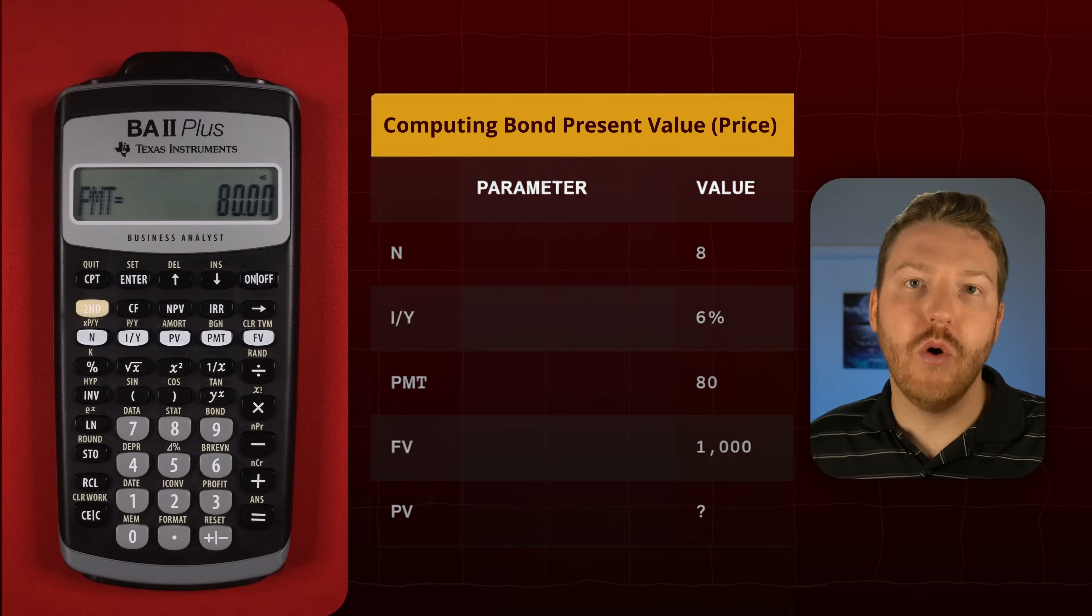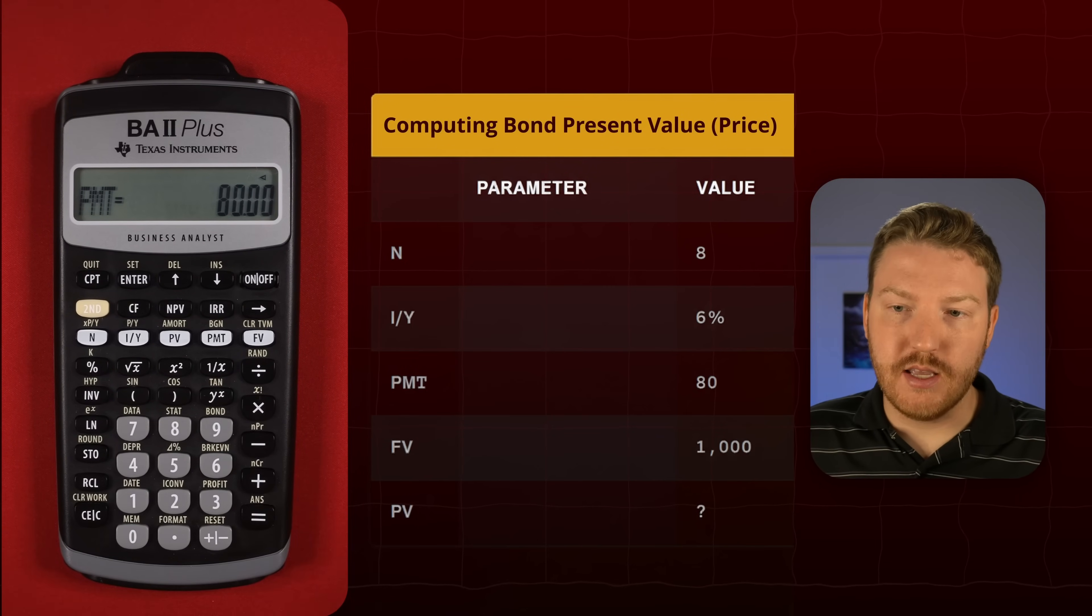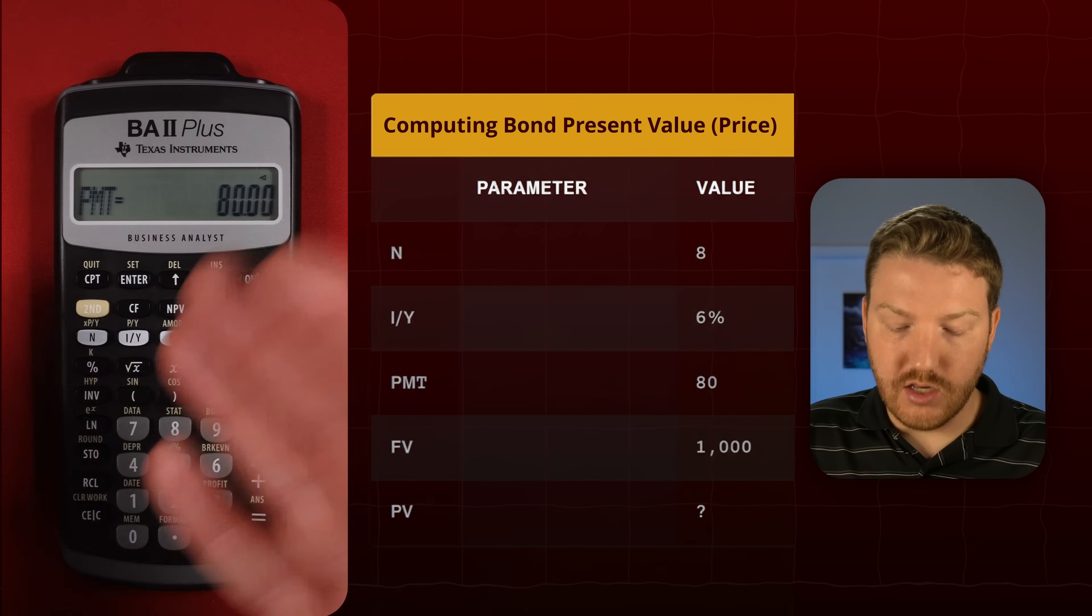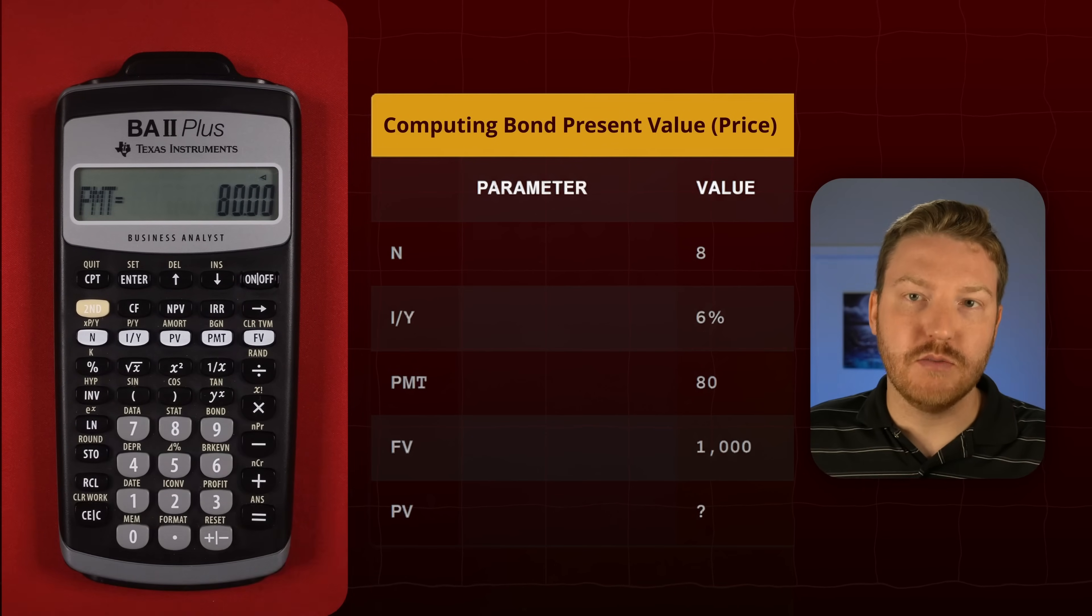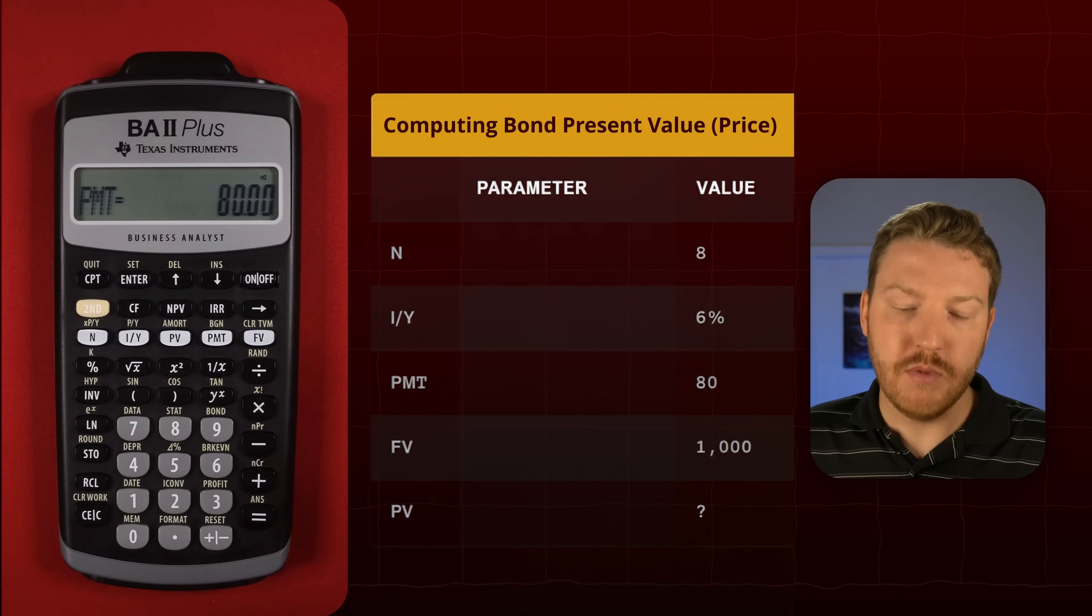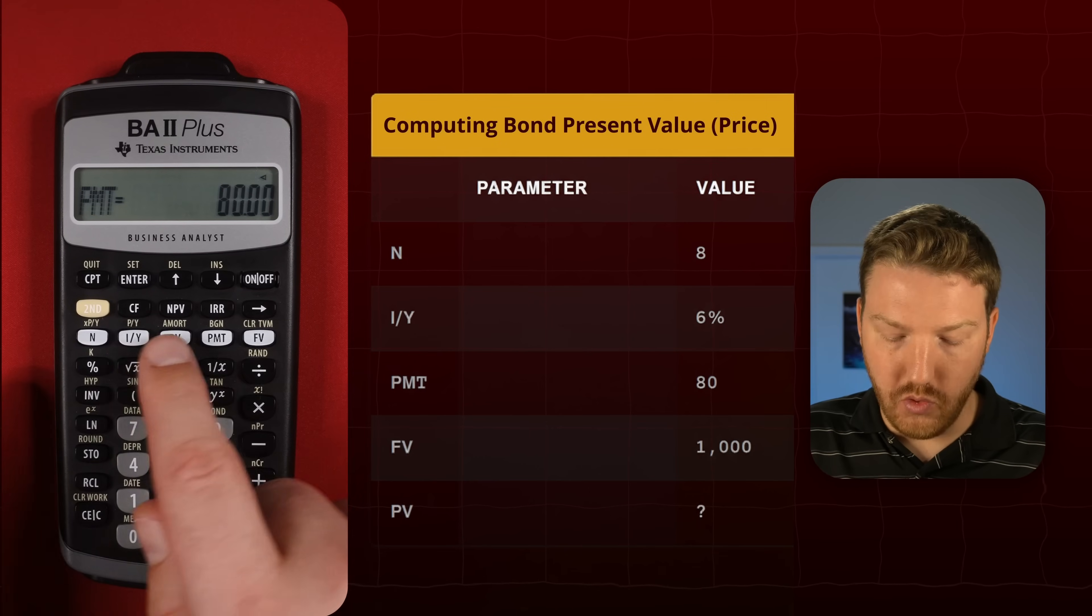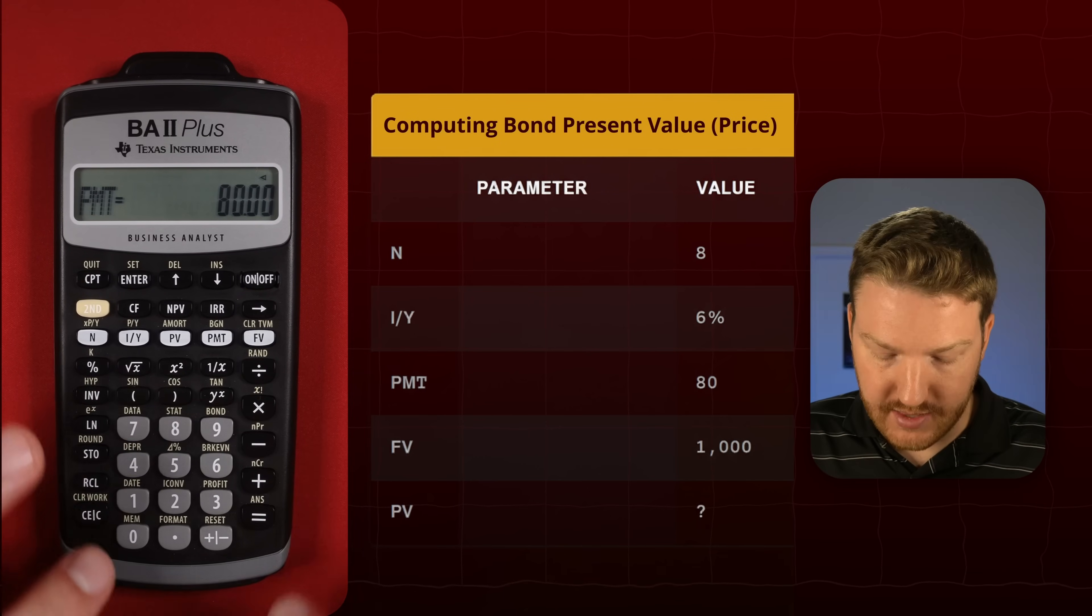Now what should we know already? If the payment is greater than the interest rate - right, we had six percent interest, 80 payment - this bond should trade at a premium, so its present value should be worth more than its future value. But let's just test that logic.